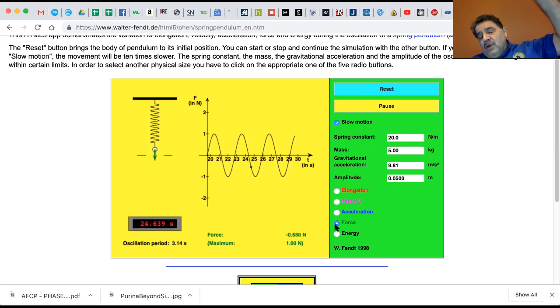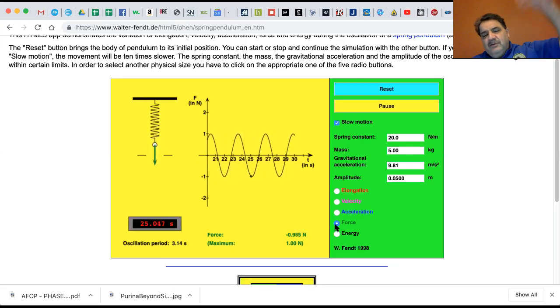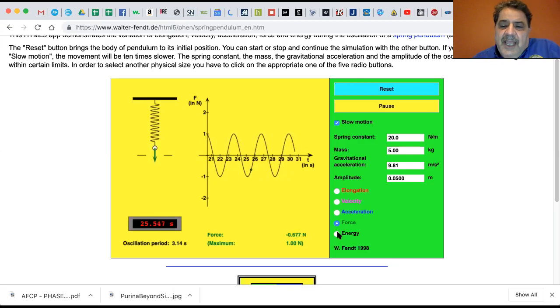well, it's no longer spring potential energy. It's gravitational potential energy. As it gets to the top, it's gravitational potential energy. And let's look at the energy diagram.